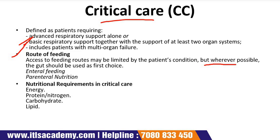Gastric aspirate should be checked every 4 to 6 hours. Volumes greater than 200 ml with nasogastric feeding and greater than 150 ml with gastrostomy feeding are acceptable. Gastric aspirate above these levels indicates delayed gastric emptying, but a single high measurement should not lead to cessation of feeding unless there is overt regurgitation or signs that the patient has aspirated fluid into the respiratory tract.